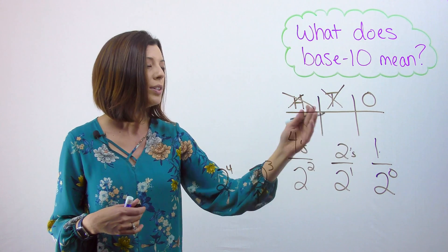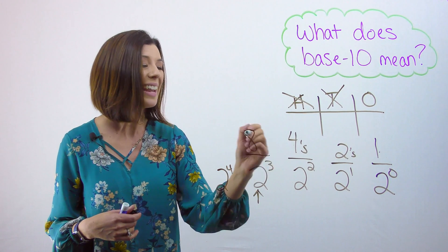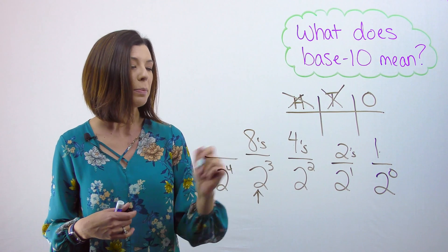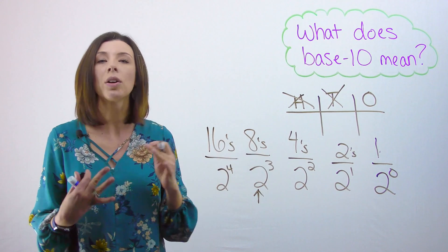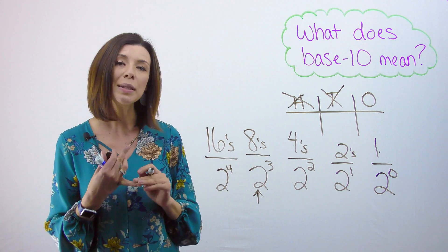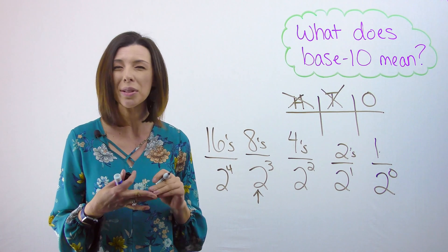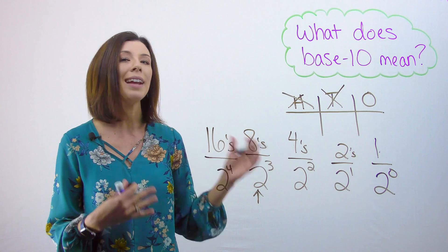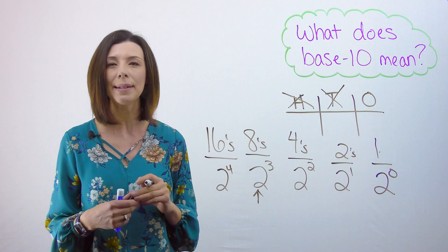So I've got 1s, 2s, 4s. This would be 8s. This would be 16s. I could keep on going. Notice that I no longer have a 10s place, a 100s place, a 1000s place. I don't have that anymore. Now in base-2, I have different named places.